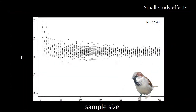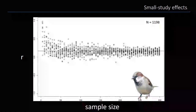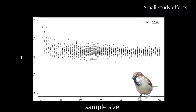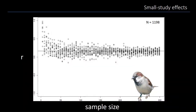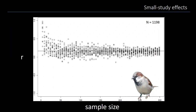Small study effects are normally observed when there is asymmetry in this funnel plot — meaning some studies are missing, normally small studies with small sample sizes that are statistically non-significant or go against the general belief. We can study this by looking at the asymmetry in the funnel plot, by looking at whether effects become smaller as sample size or precision increases. Though really understanding publication bias is very, very hard.